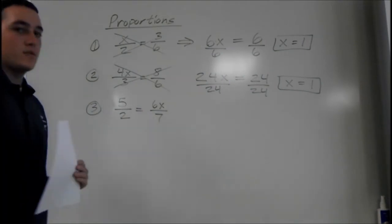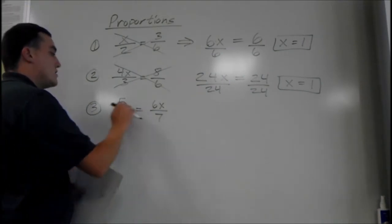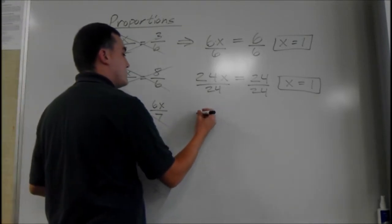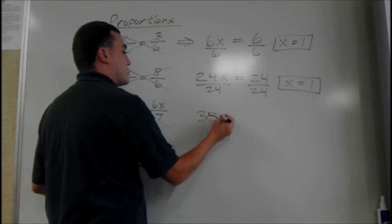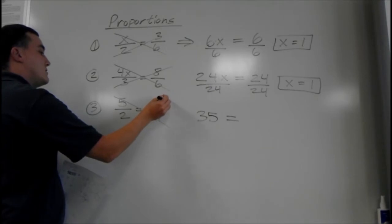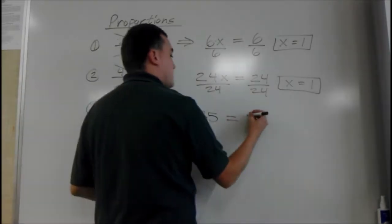This one might not work out so well though. So we have, first one, 5 times 7 is 35. And then set it equal to the other one. 6x times 2. 6 times 2 is 12. So that's going to be 12x.